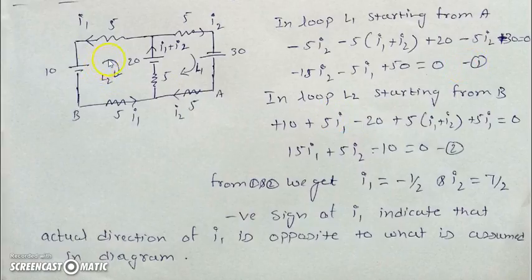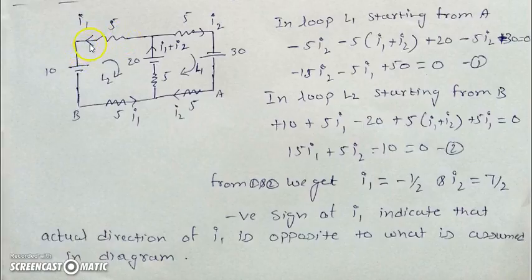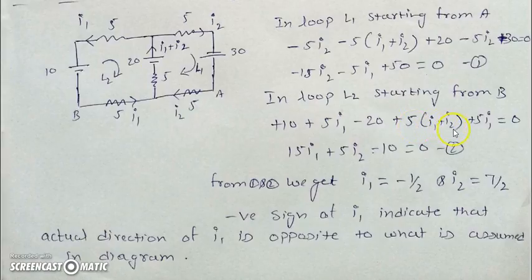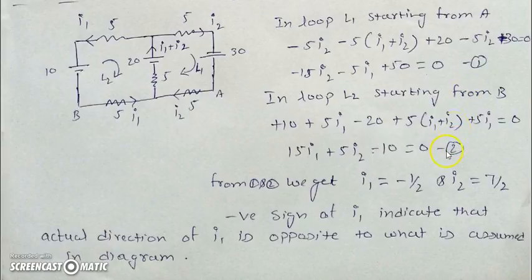For loop 2, we move in an anti-clockwise direction starting from point B. We first encounter a battery jumped from negative to positive, giving plus 10. Moving opposite to the direction of current through 5 ohm gives plus 5 I1. Crossing a battery gives minus 20. Moving opposite to the current through another 5 ohm gives plus 5 times (I1 plus I2). Crossing a 5 ohm resistance opposite to current gives plus 5 I1. Returning to point B gives zero. We simplify this as equation 2.